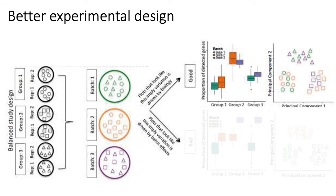In a better experimental design, if you have three groups and want to do sequencing in three batches, what you could do is divide each group into two replicates — group one into replicate one and replicate two, group two into replicate one and replicate two, and group three similarly. Then you divide the replicates among the batches such that each batch is composed of replicates from two different groups: one replicate from group one goes with group two, another replicate from group one goes with group three, and so on.